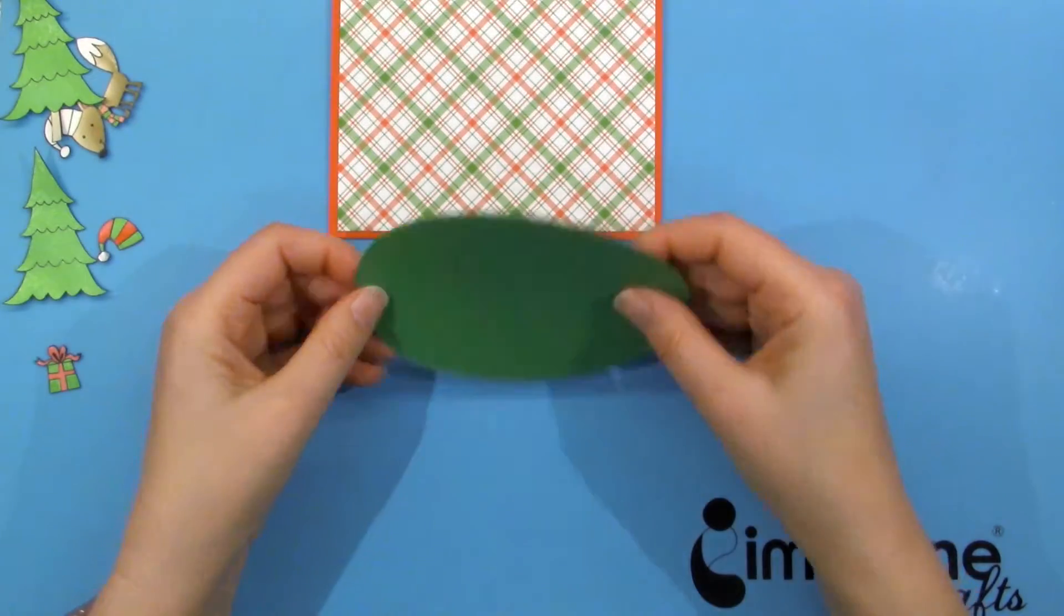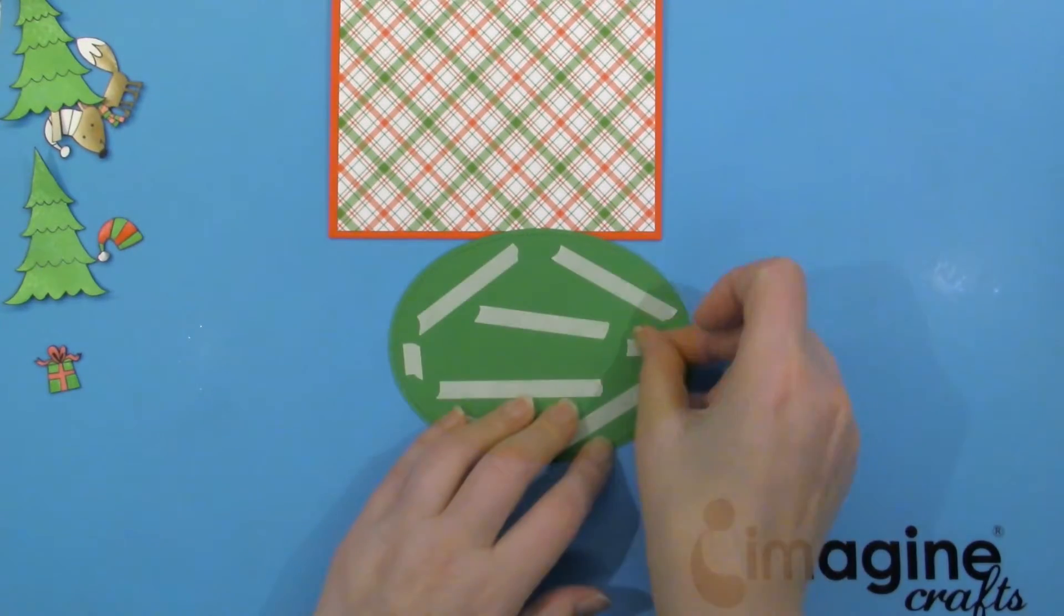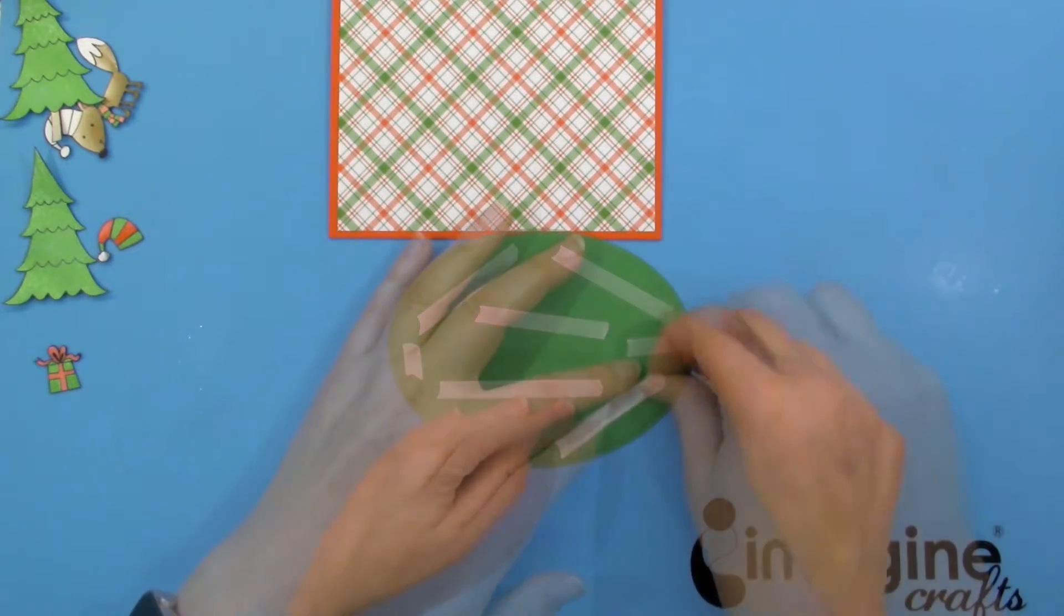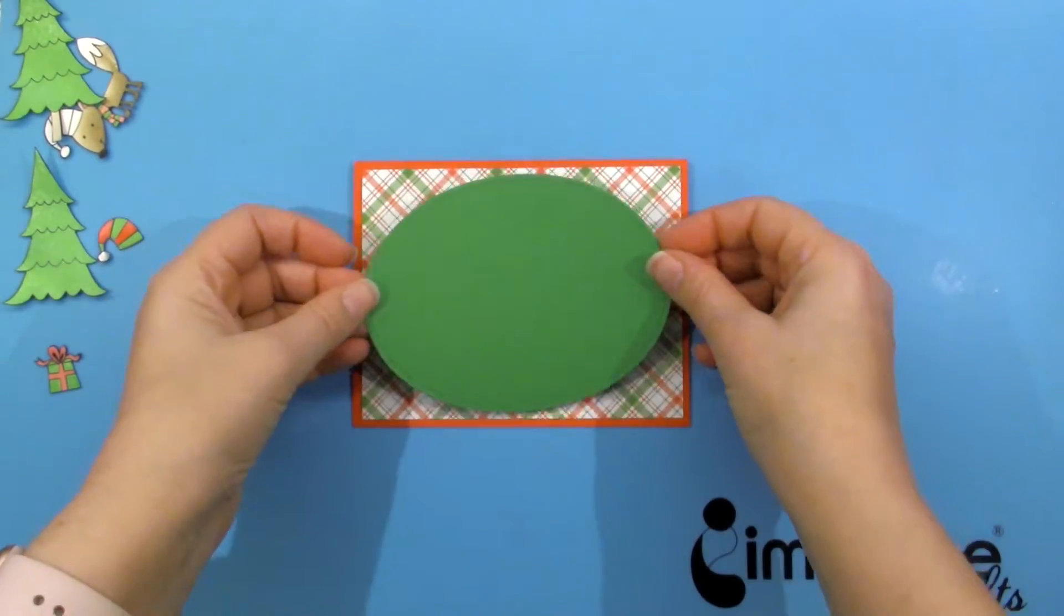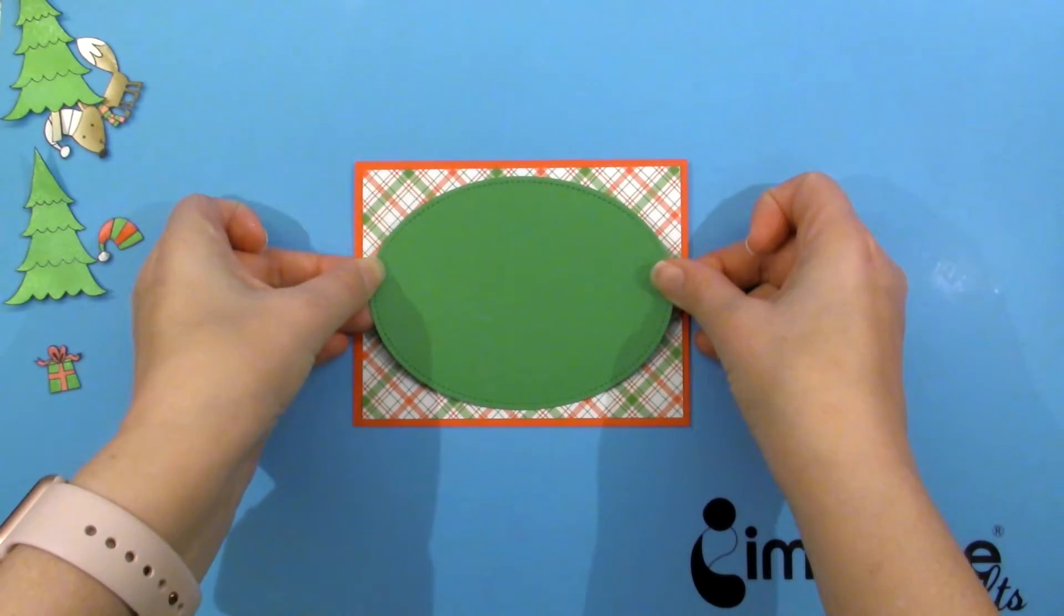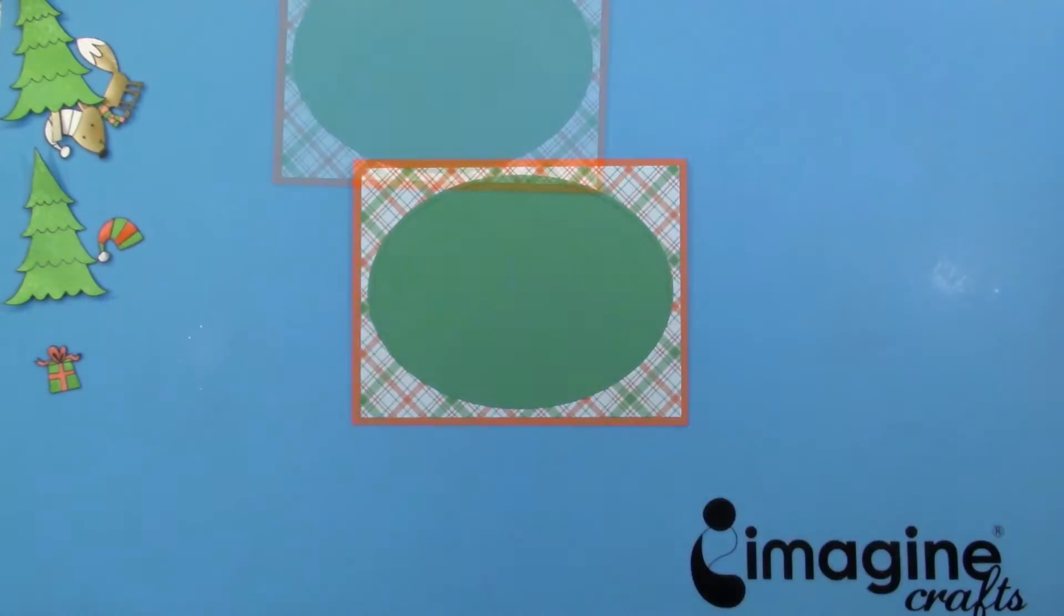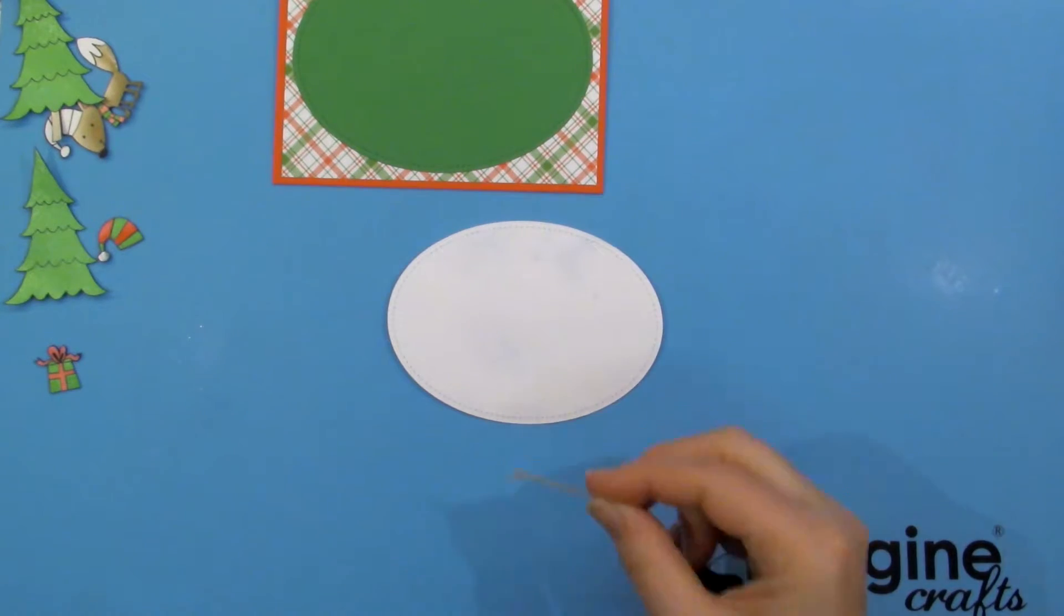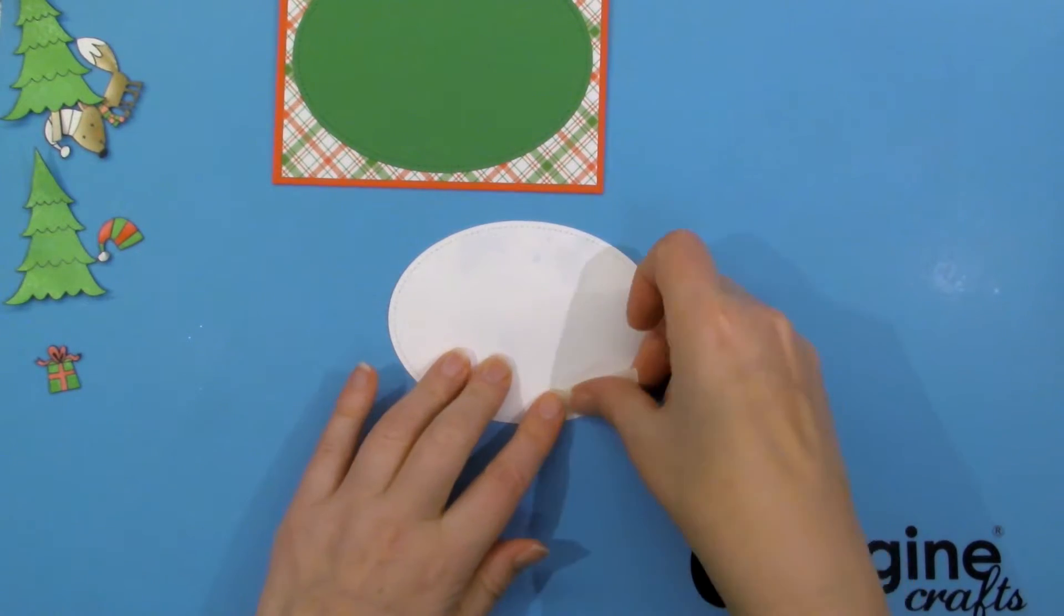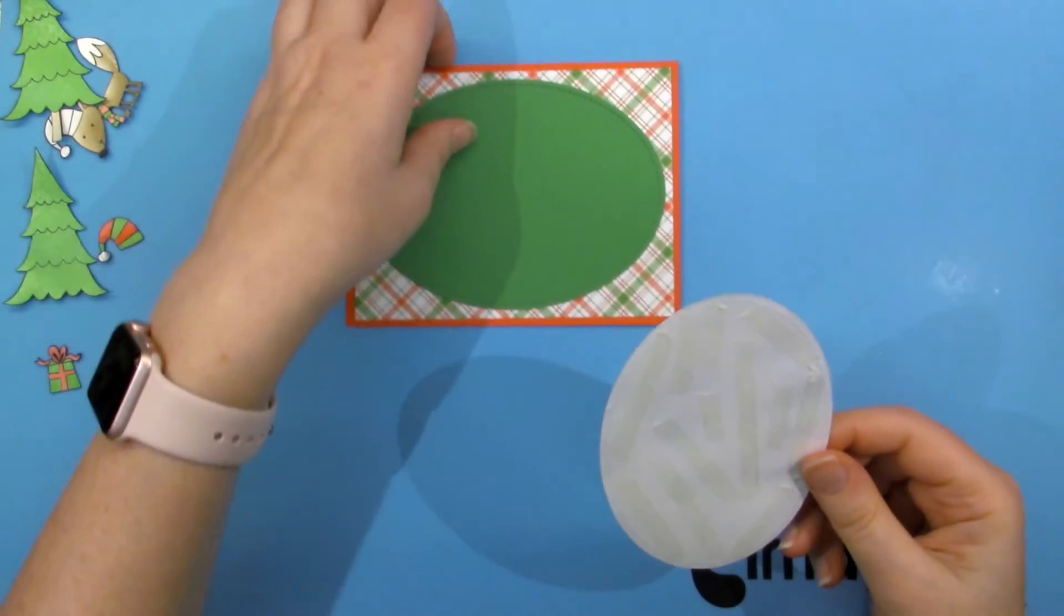Out of green cardstock, I cut a slightly larger oval. I'm going to use this as a mat for my background. If the background warped at all, be sure to use a generous amount of strong adhesive such as tarot tape.